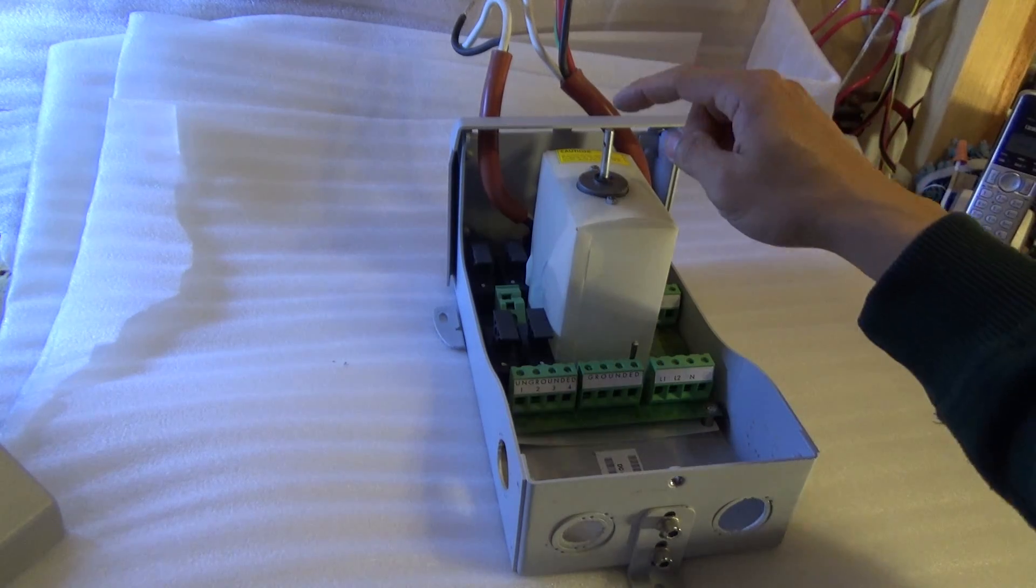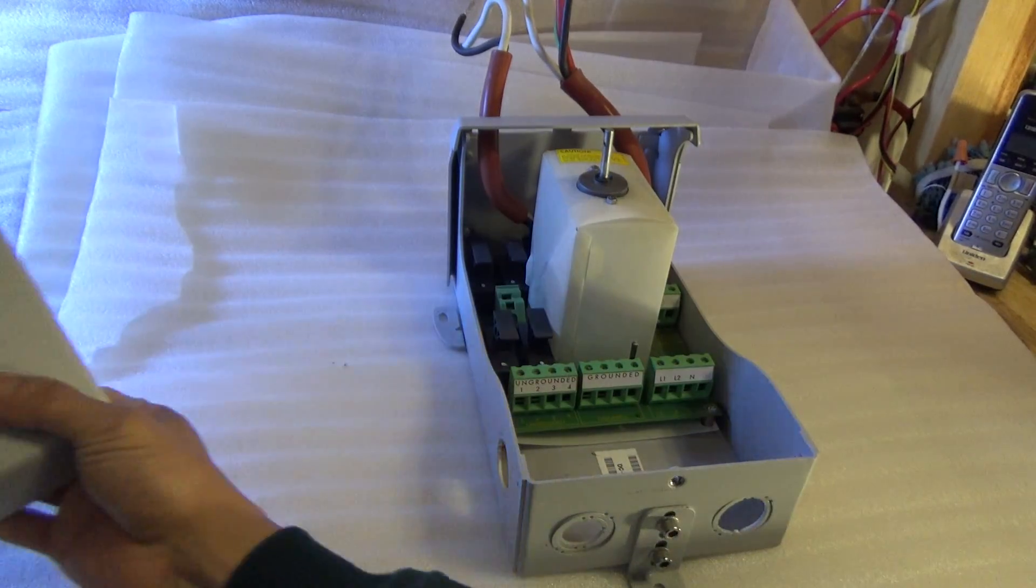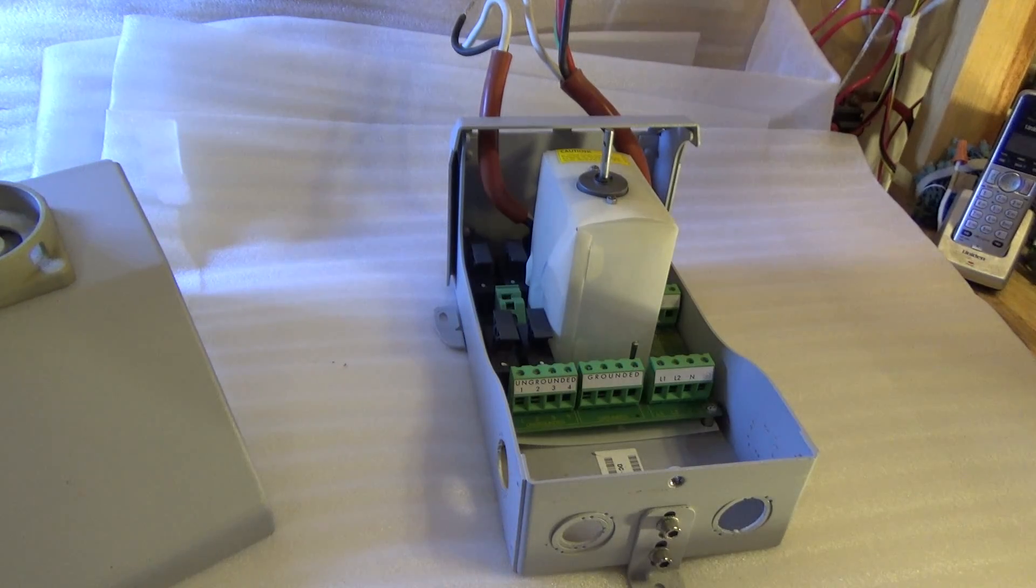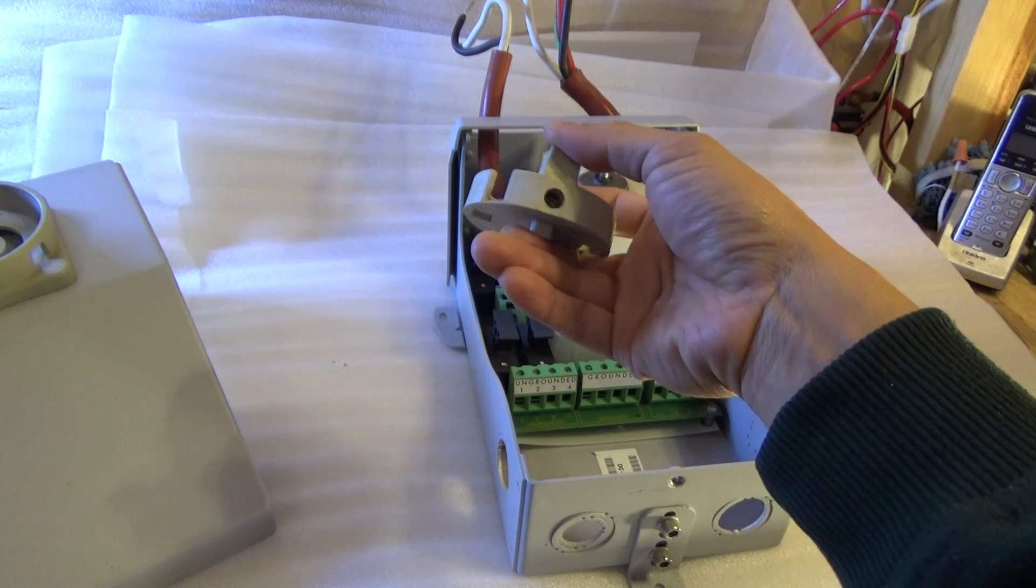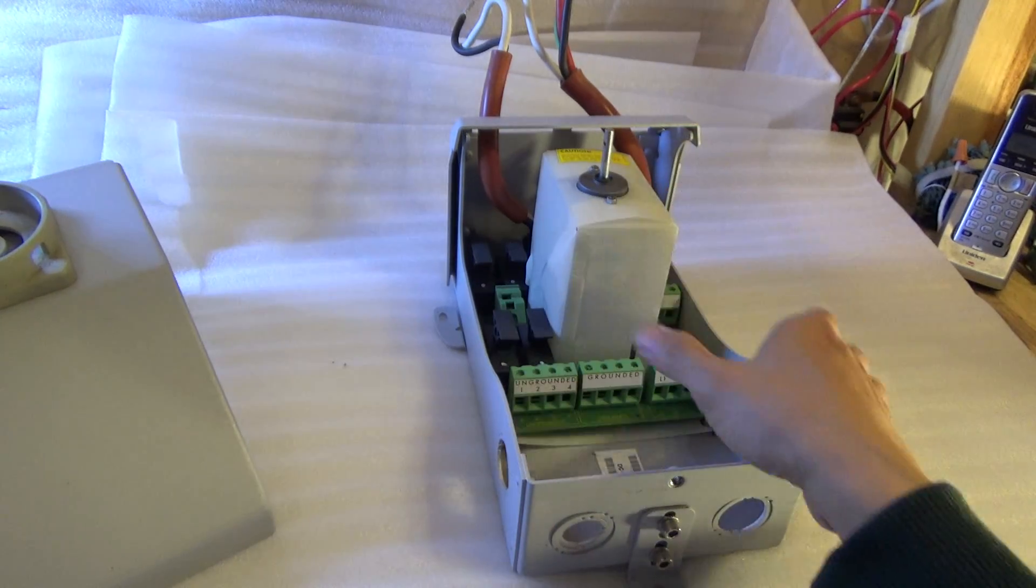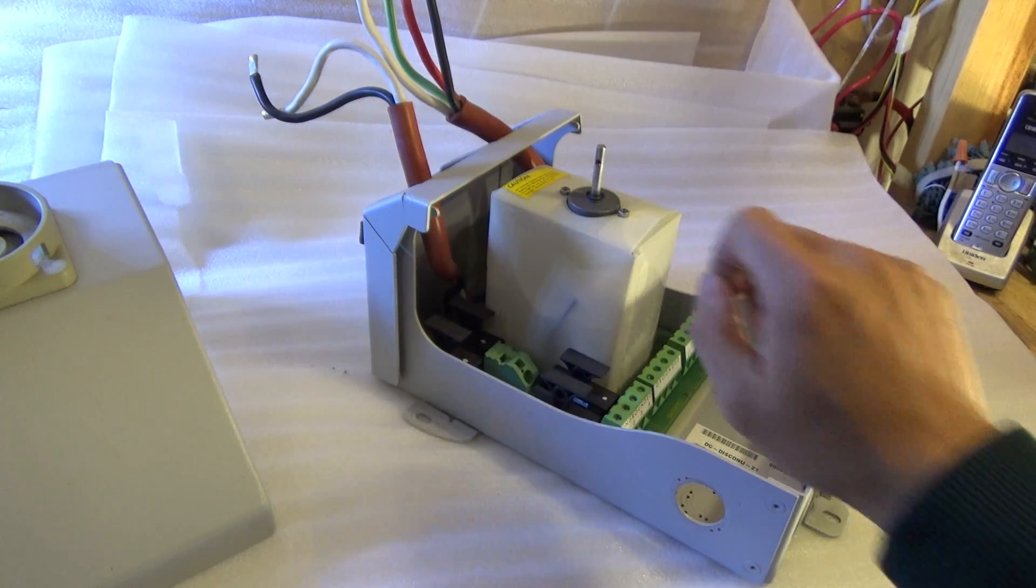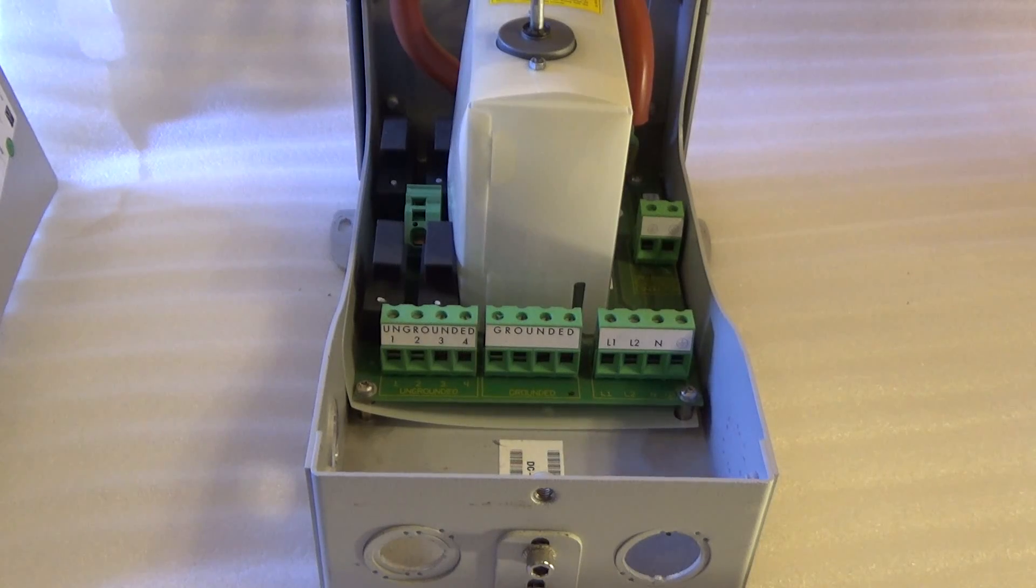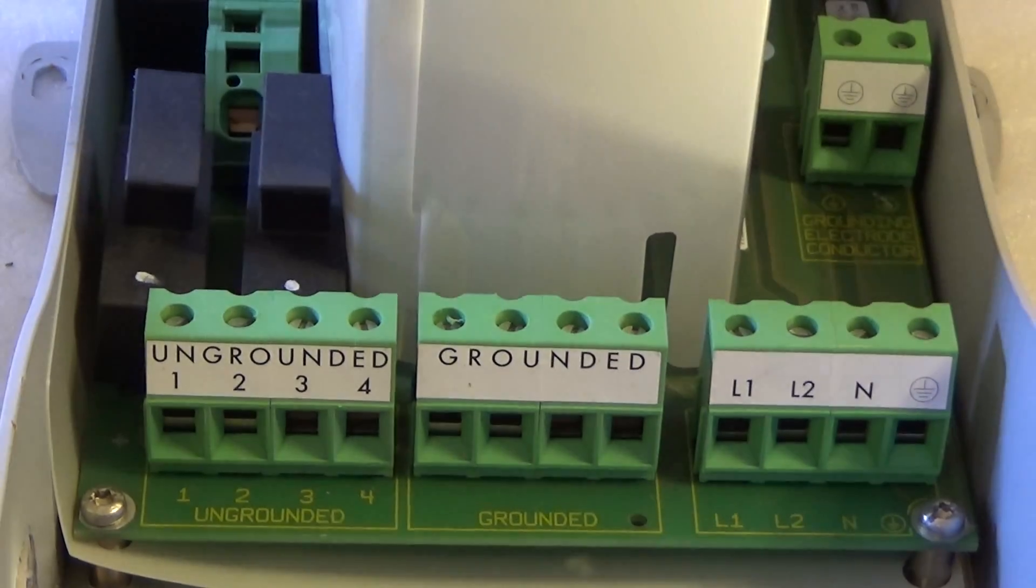You see this is the disconnect that was connected to this by just a single screw inside there. And the screw goes in here. Alright, so this is what the inside of the disconnect looks like. Let me zoom in so you can see more clearly.